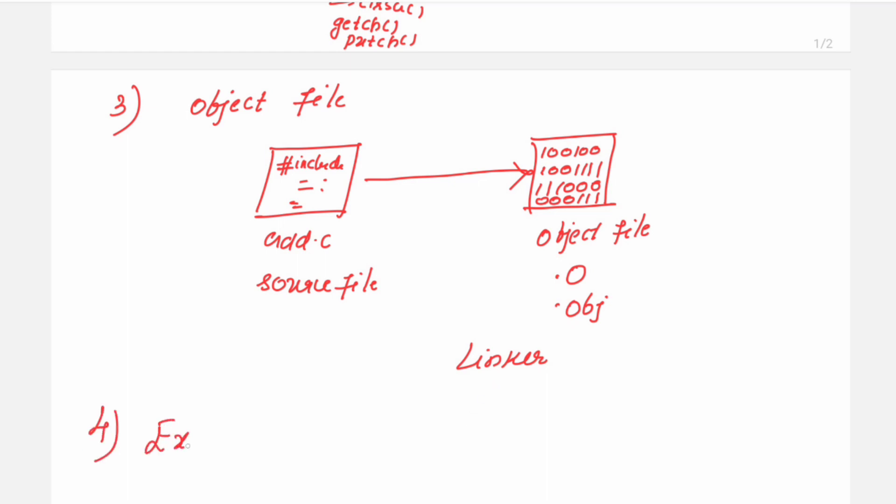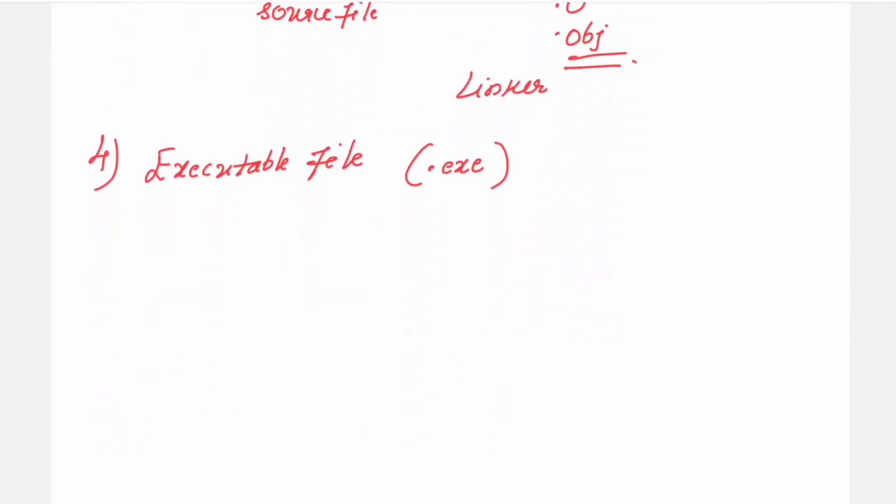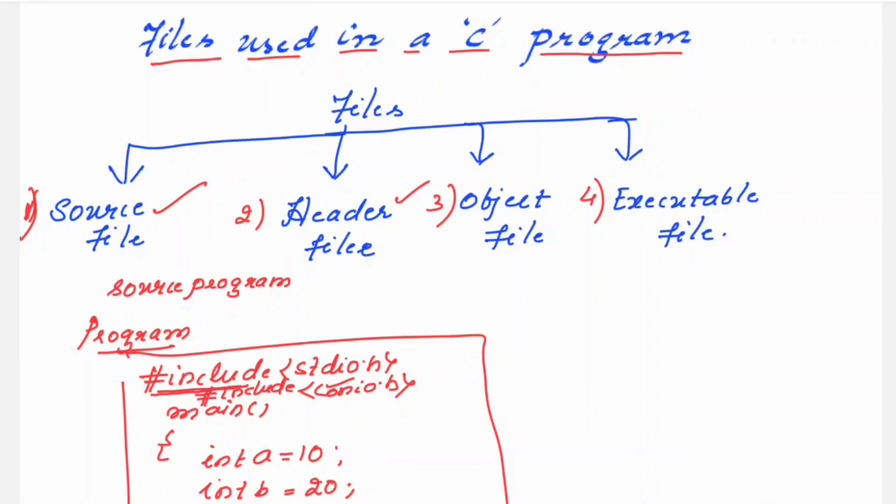The linker is one which uses this object files to produce an executable file. So that is your fourth type of the file and this will have extension .exe. So this is how you can relate the files. You started with the source file and in the source file you are making use of the header files to perform all the related functions which you want to include in your source program. Then the source file has to get converted into object file, that is in a language which the machine understands. The linker will convert this object file into executable file.